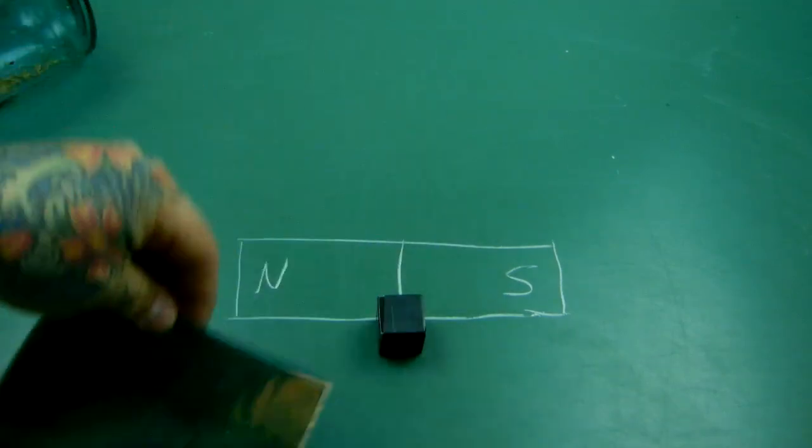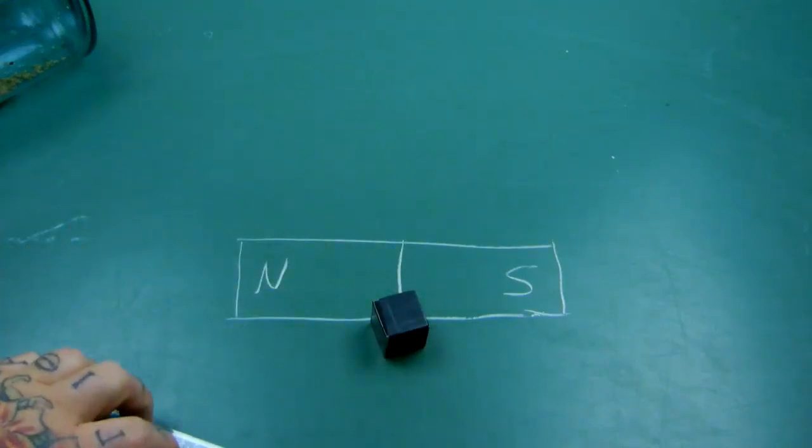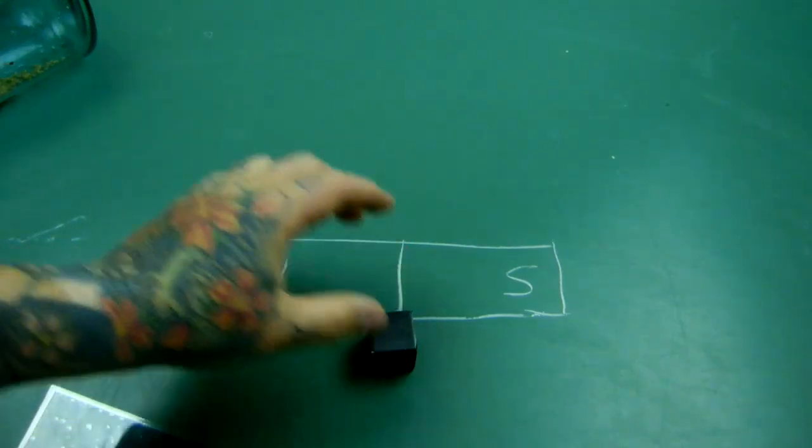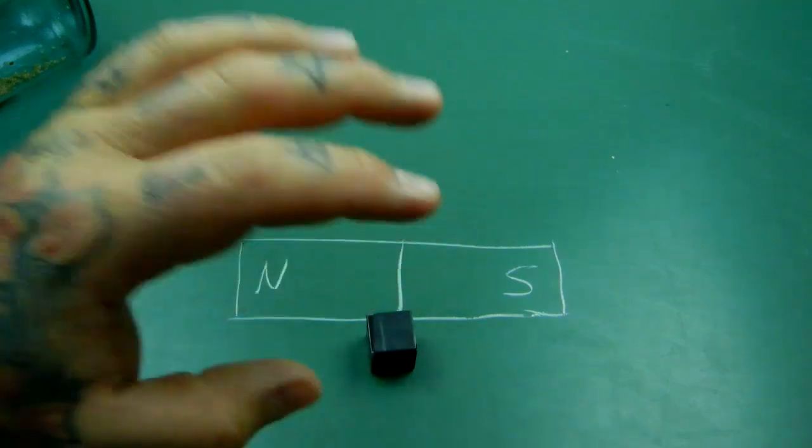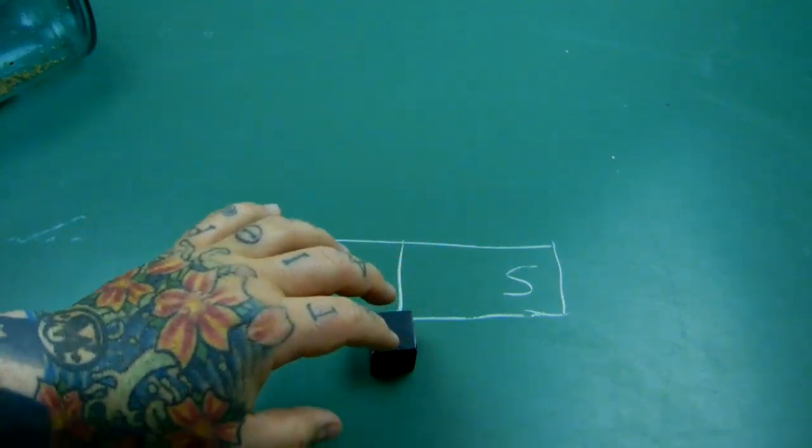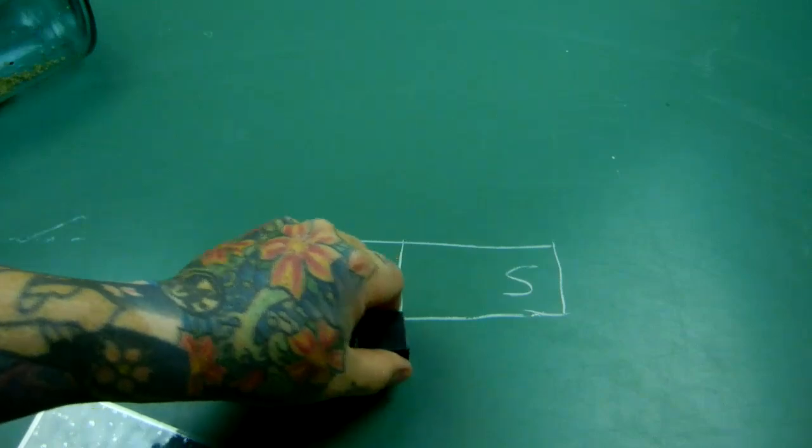That means if I had a slicer, and of course, this thing is ceramic, you can't really cut it like a piece of baloney, but if I had a slicer and I was able to make a million thin slices of this magnet, every thin slice will have a north pole and a south pole. What does that mean?